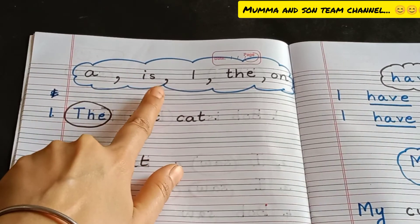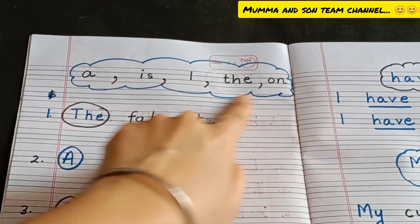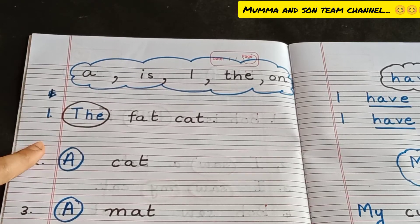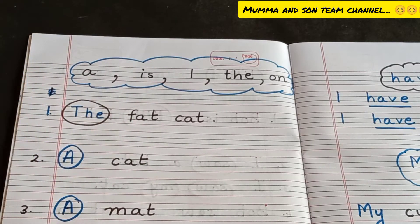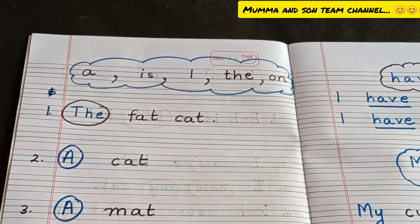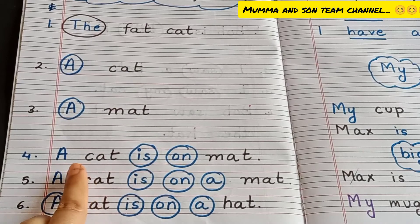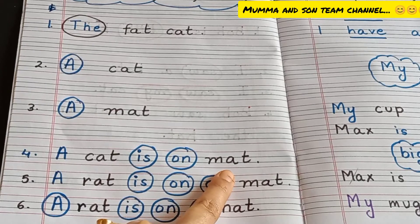Here, starting sight words include: a, is, I, the, on. You can start with these strong beginning sight words. First, use a small phrase with your sight words — for example, 'The fat cat.' It's possible children can't learn a whole sentence right away, so start with: 'a cat', 'a mat.' After, when students are reading, you can give sentences with one or two sight words for them to read.